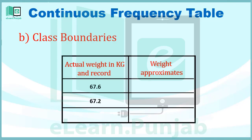तो अब हम पहले Column में 67.6, 67.2 और 67.5 लिख लेते हैं। अब हम इनकी Approximate Values मालूम करते हैं। 67.6 में Point के बाद आने वाली Value 5 से बड़ी है, इसलिए इसकी Approximate Value 68 होगी। और 67.2 में Point के बाद वाली Value 5 से छोटी है, इसलिए इसकी Approximate Value 67 ही होगी।